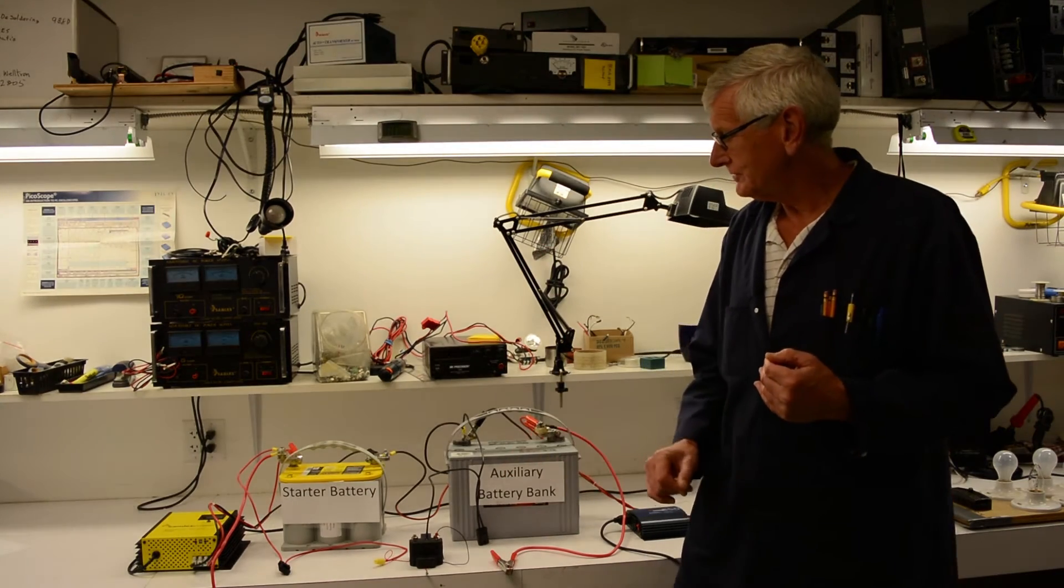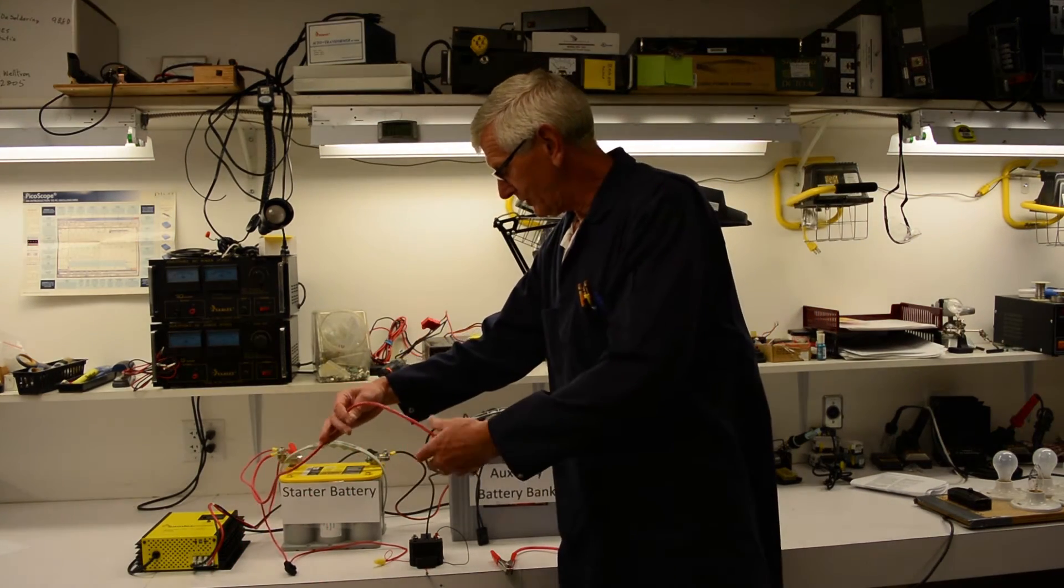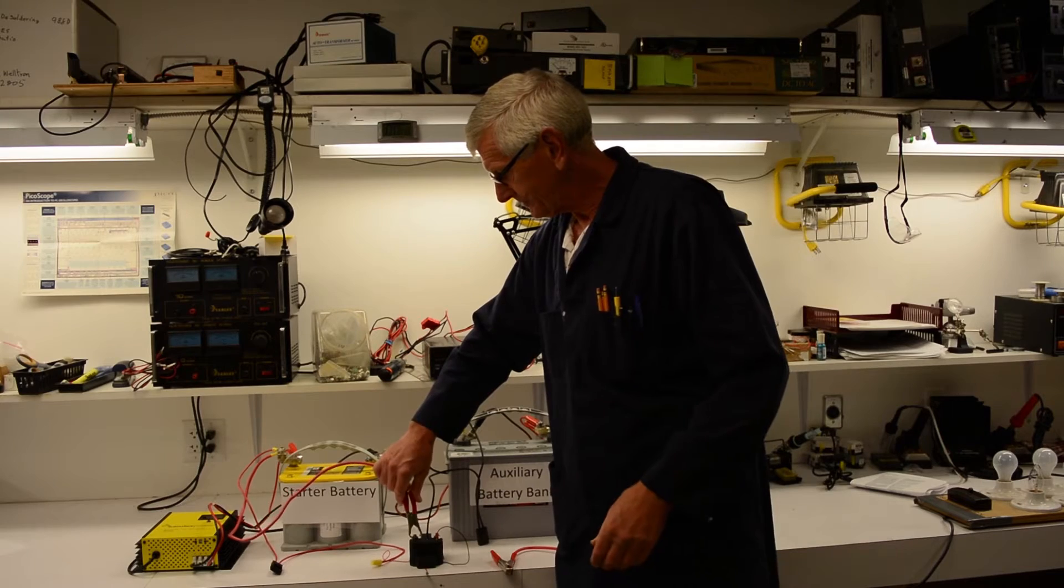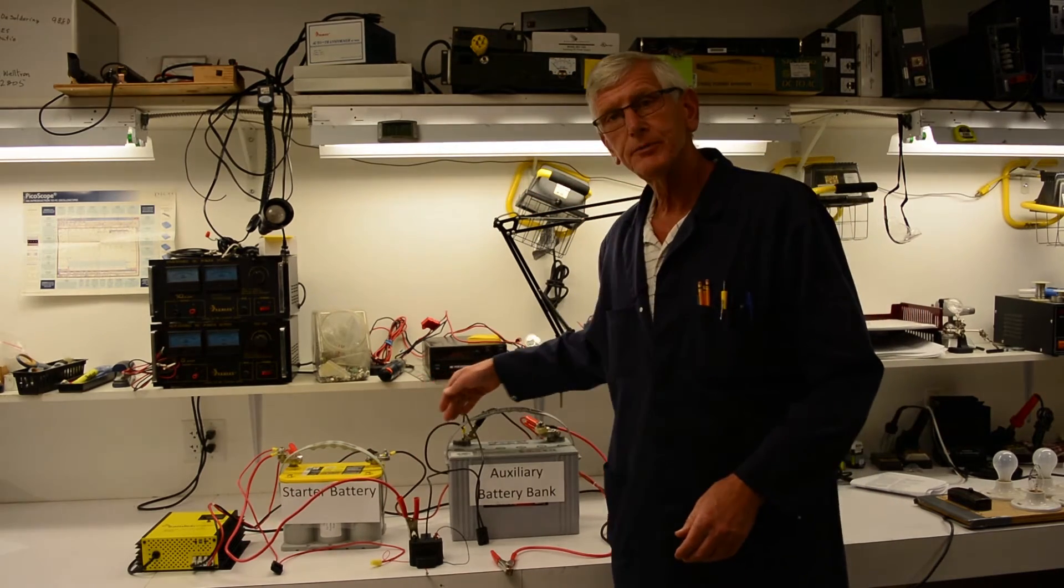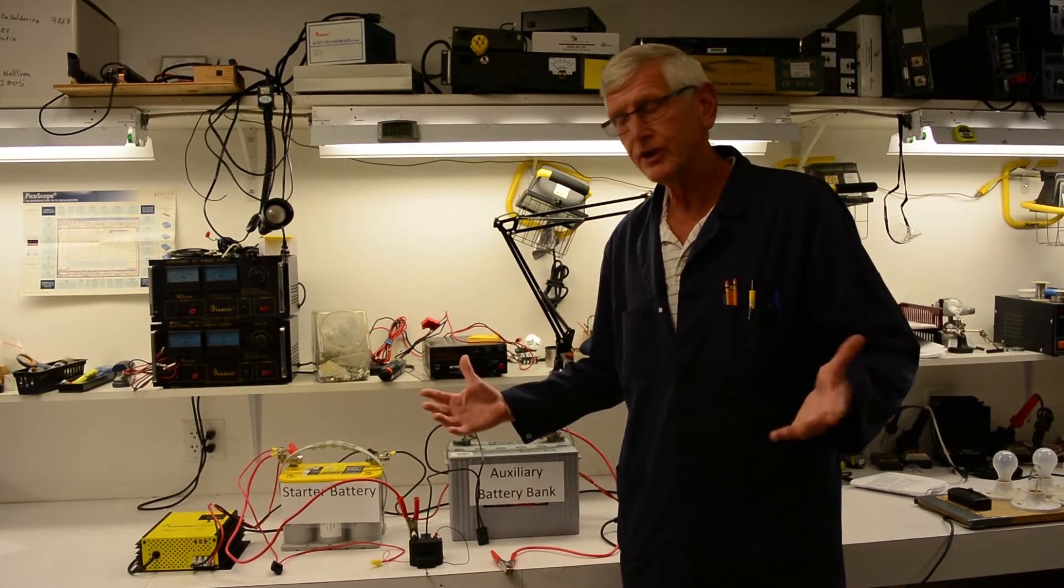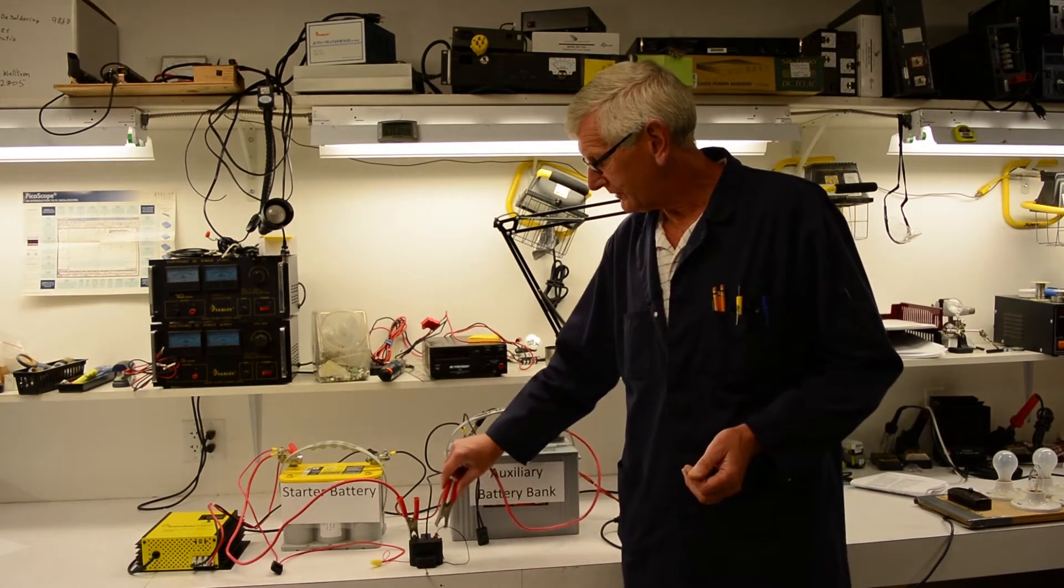So in this application, I have a starter bank which I'm going to hook up to one of the inputs. I have a ground that goes to the common ground between the two battery banks which is your negative bus. And I have my auxiliary bank on the other side.